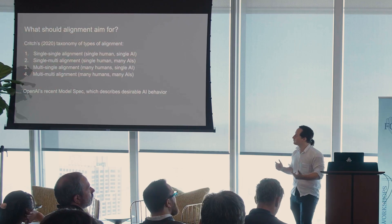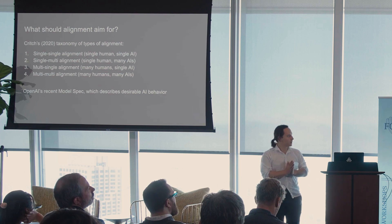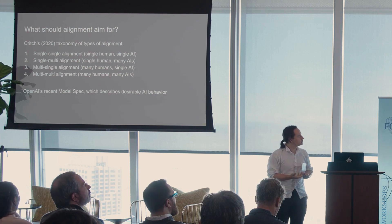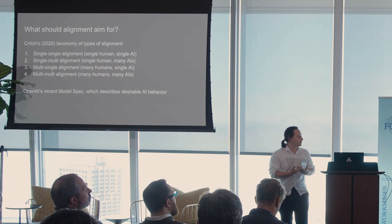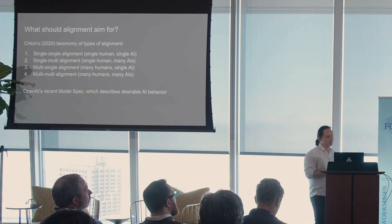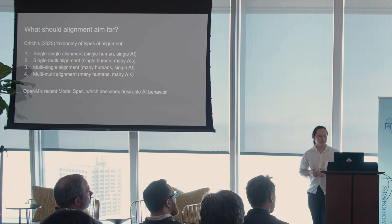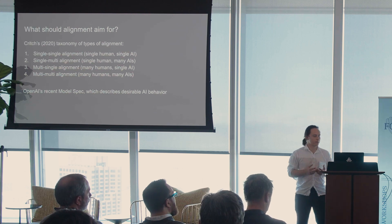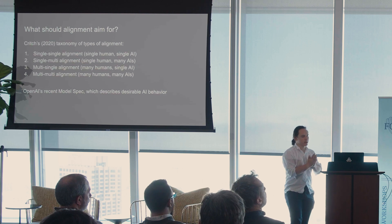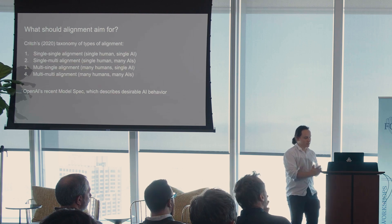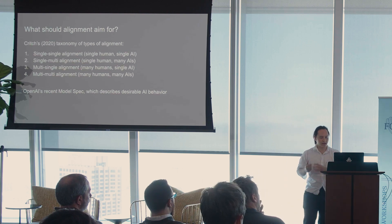It's an issue that I've been quite confused about in the past, and I think other people have as well. The way I'm going to go through this talk, I'm going to be drawing on two frameworks that have been put forward. One of them is from Andrew Critch from a few years ago, who gave a taxonomy of different types of alignment. He divided the goals of alignment into four categories, which vary depending on whether you're trying to align a single human or many humans, and a single AI or many AIs.